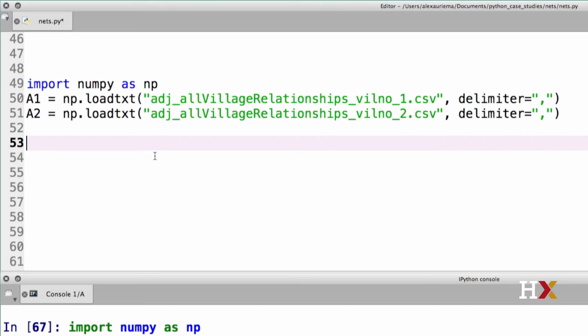Our next step will be to convert the adjacency matrices to graph objects. We will accomplish that by using the toNetworkXGraph method. So, G1, the graph that corresponds to A1, is equal to Nx.toNetworkXGraph A1. And G2 will be the graph object that is constructed from the adjacency matrix called A2.